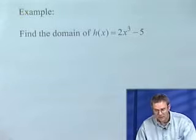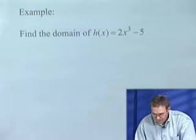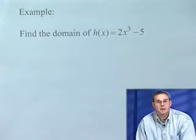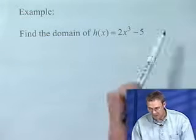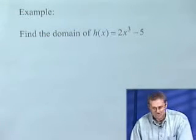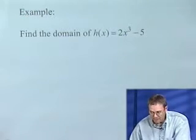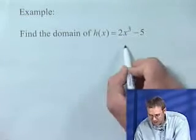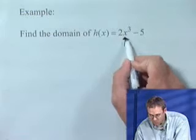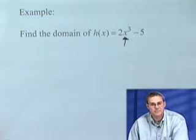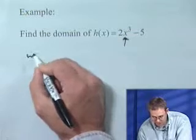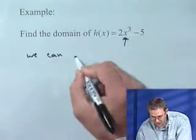Find the domain of h(x) = 2x³ - 5. Now here we don't have anything in the denominator, so we don't have to worry about that. Is there any number that we can plug in for x where we're not going to get a real number to come out? Well, no. We can put any number in for x.